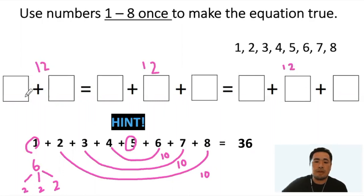From there, the answer is pretty straightforward. Seven and five gives us 12. Eight, three and one. Six, four and two.